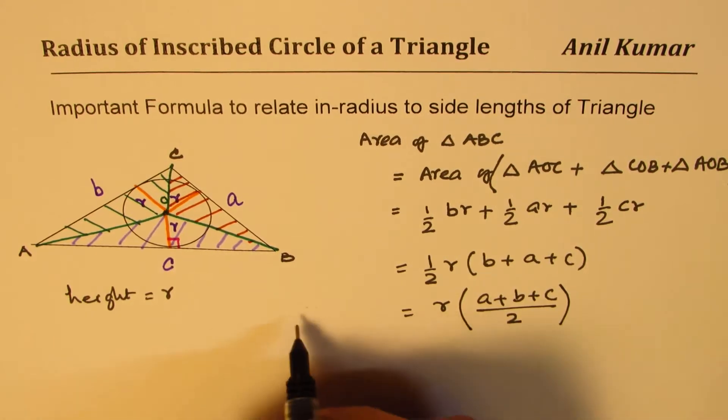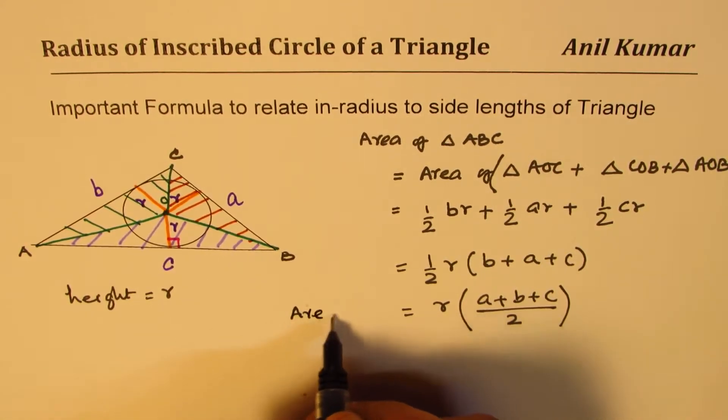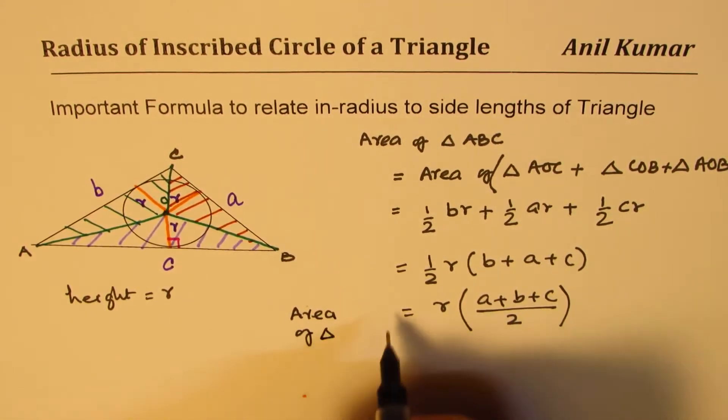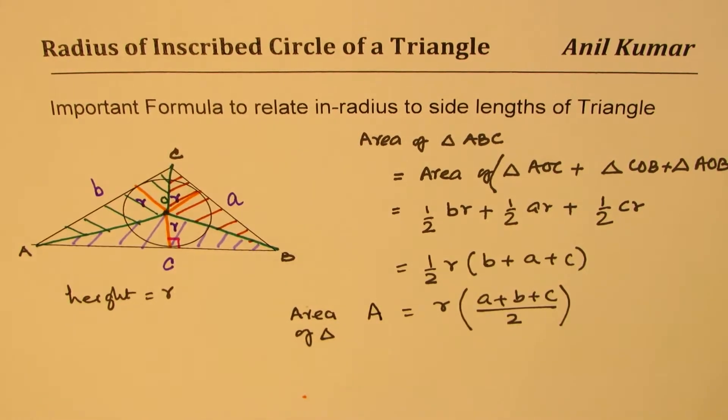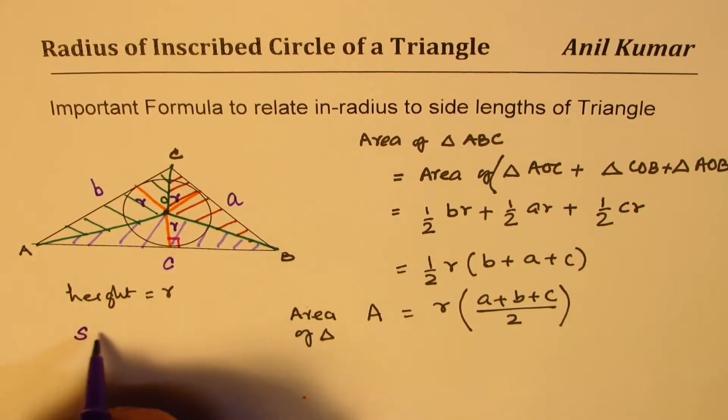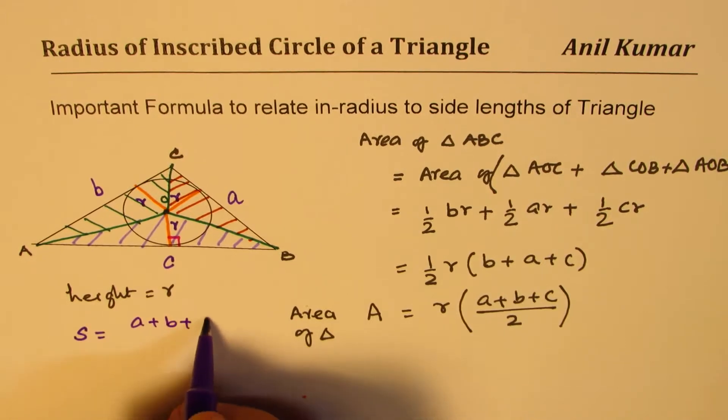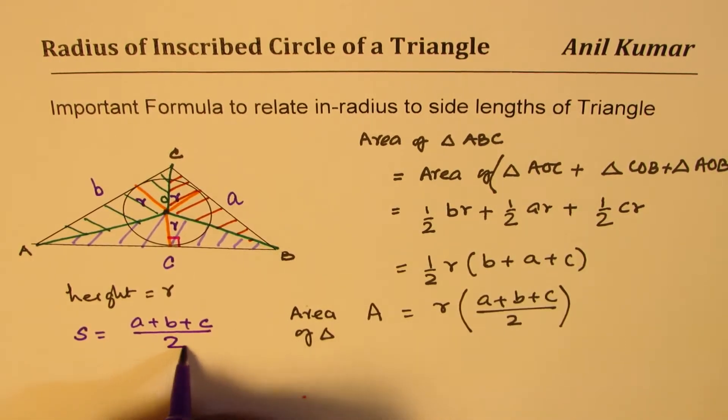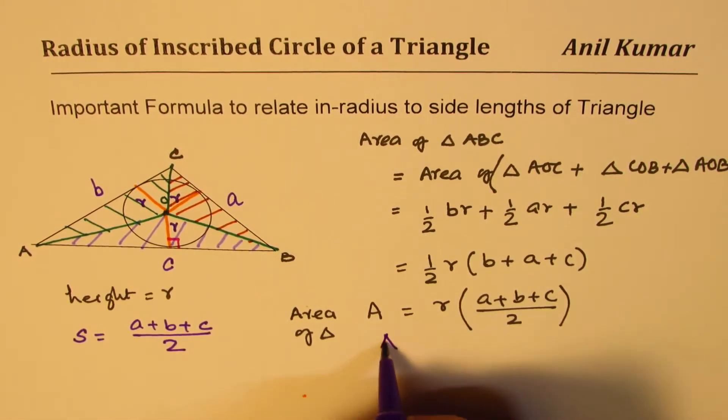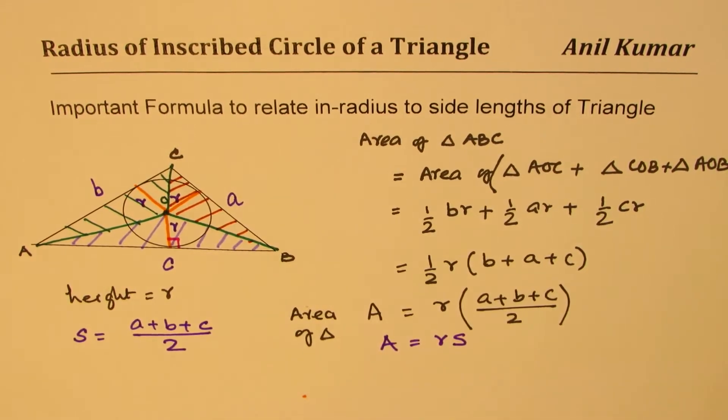So that becomes the area of triangle A. Now, many times we use S as sum of the sides divided by 2. So I could also write this as area is R times S.